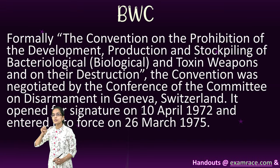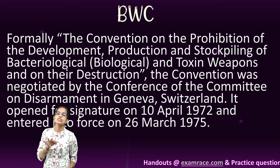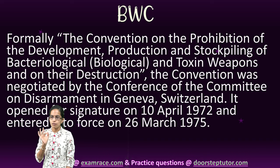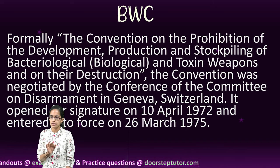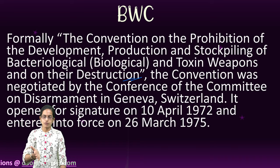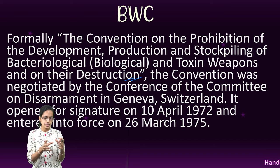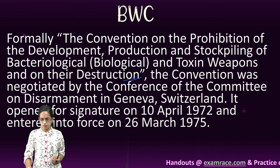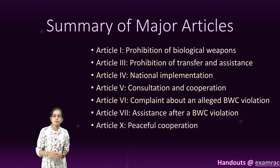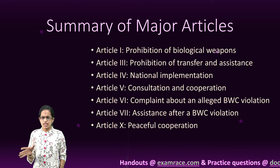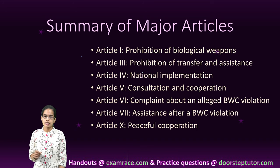Prior to the Biological Weapons Convention, there was a convention on the prohibition, development, production, and stockpiling of bacteriological and toxic weapons and their destruction. This was the prior name of the Biological Weapons Convention. It is a relatively short convention with just 15 important articles, of which 6 or 7 are really important.